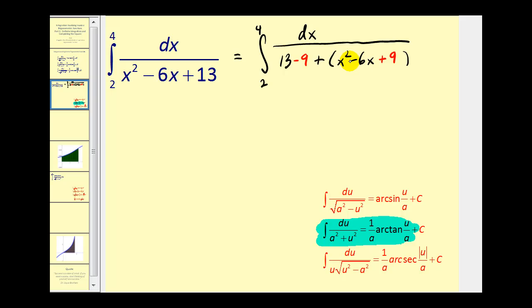Now let's go ahead and rewrite this. 13 minus 9 would be 4. And now this is a perfect square trinomial. The factors of 9 that add to negative 6 would be negative 3 and negative 3. So this becomes the quantity x minus 3 squared.